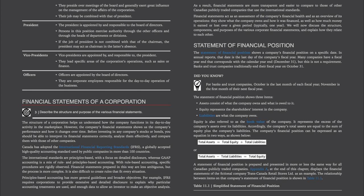Financial Statements of a Corporation. The structure of a corporation helps us understand how the company functions in its day-to-day activity in the marketplace. However, the company's financial statements show the company's performance and how it changes over time. Before investing in any company's stocks or bonds, you should be able to interpret its financial statements correctly, analyze them effectively, and compare them with those of other companies. Canada has adopted the International Financial Reporting Standards (IFRS), a globally accepted high-quality accounting standard used by public companies in more than 100 countries. The international standards are principles-based, with a focus on detailed disclosure, whereas GAAP accounting is a mix of rule- and principles-based accounting. With rule-based accounting, specific procedures are rigidly observed.